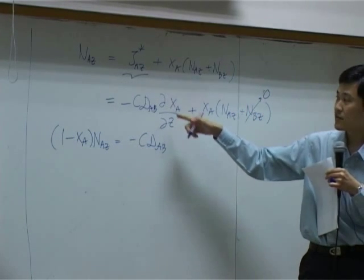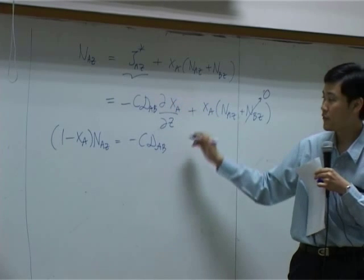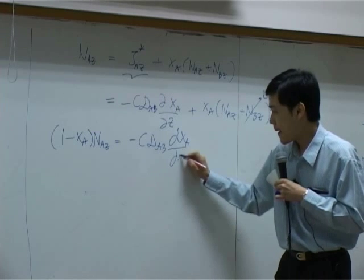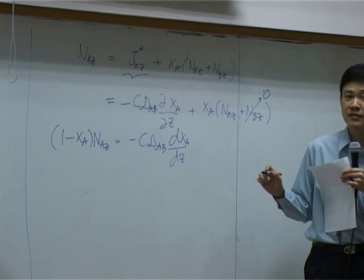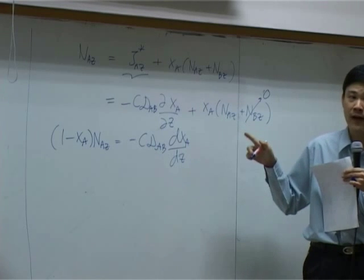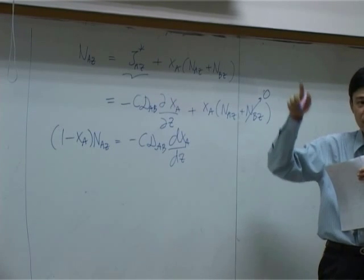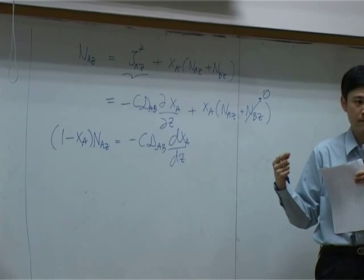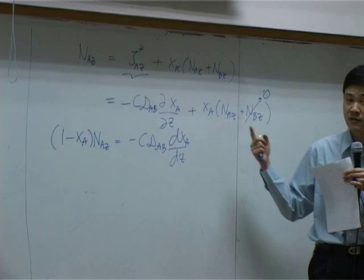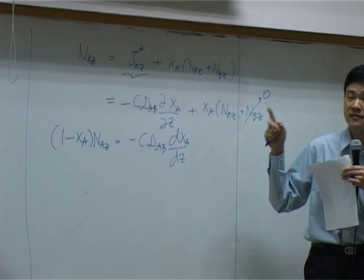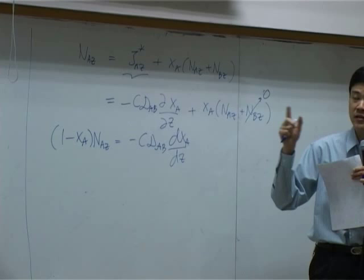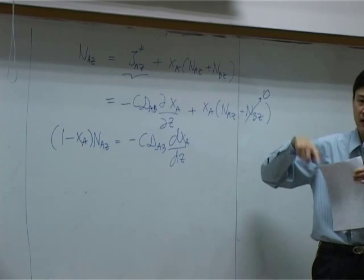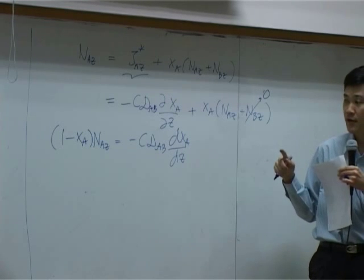And I can also change partial differentiation to total differentiation. Because I assume that concentration of A or mole fraction of A does change with respect to z only. It does not change with respect to r or zeta. So the problem here is converted from three-dimensional into only one dimension. So there's flux in only one direction, z direction only.